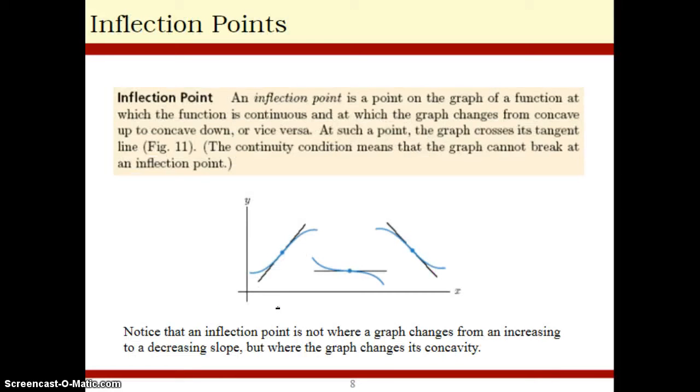Which brings us to inflection points. Inflection points are pretty simple. If you have a graph that is both concave up and concave down, the inflection point is the point at which the concavity changes. So do you see here some examples of inflection points where your concavity is switching from up to down or down to up? That's pretty straightforward.